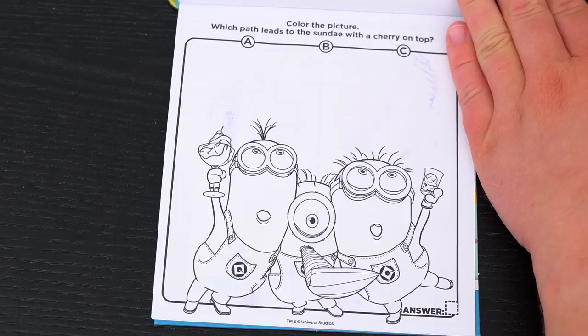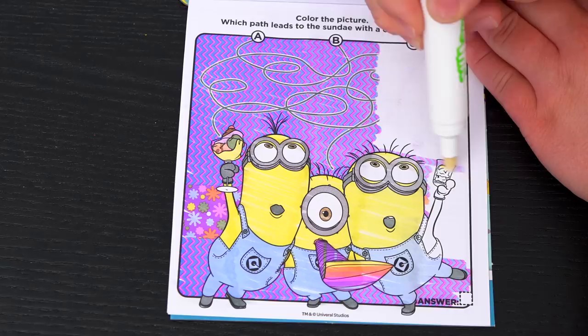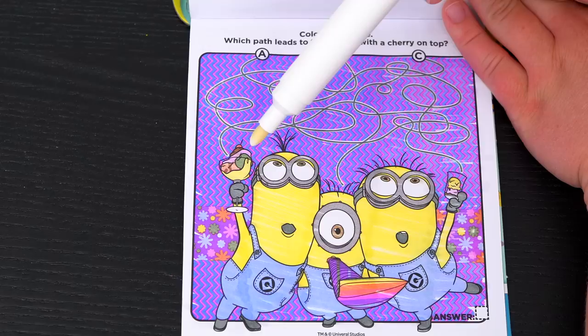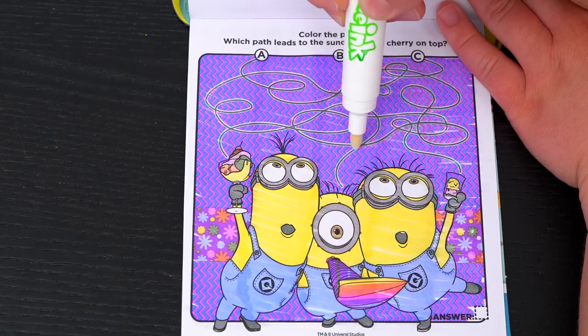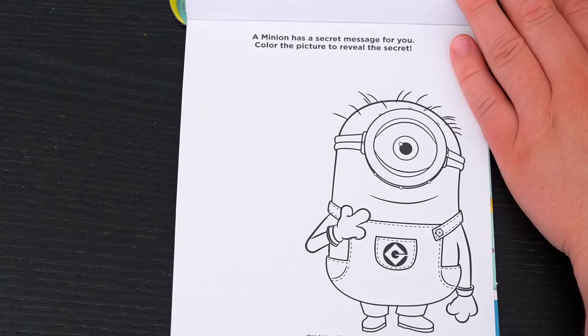Path leads to the sundae with a cherry on top. Okay, so here's the sundae with a cherry on top. Let's see if path A leads there! Yeah, it did! Looks like A is the correct path! Yay!